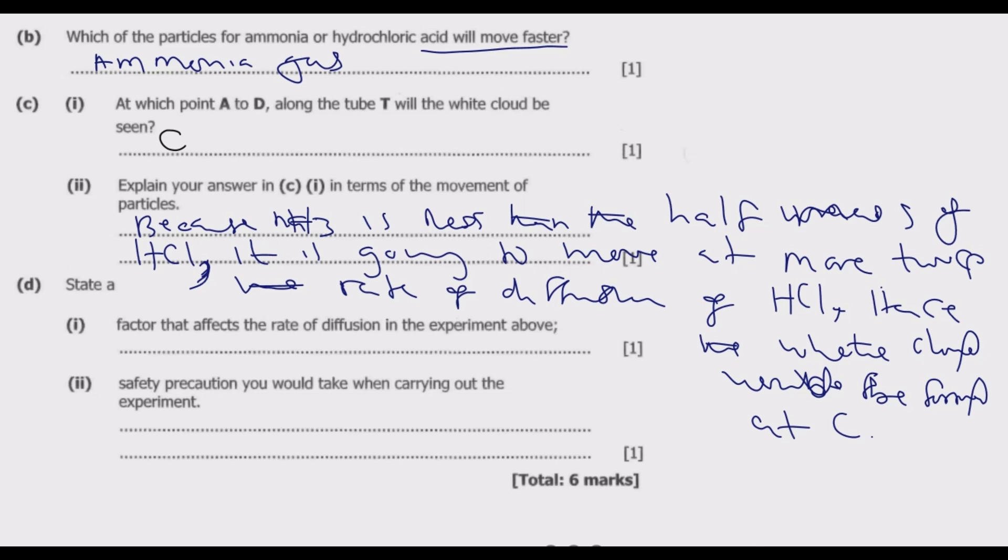Then at D: state a factor that affects the rate of diffusion in the experiment above. So which factor is that? We've already talked about it. This is the mass of the particle.